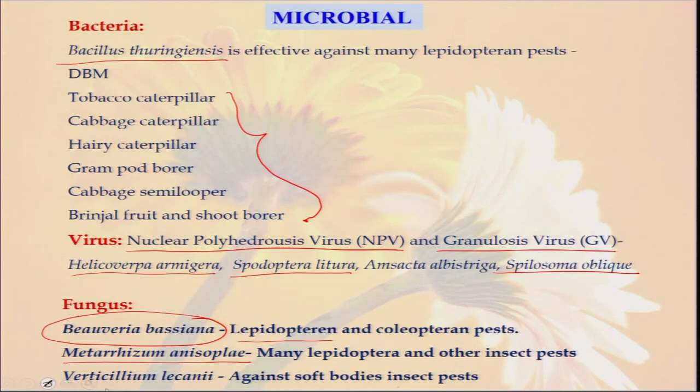There is another fungus called Verticillium lecanii. They also work against soft-bodied insect pests. So in our organic farming, apart from physical method, mechanical method, and cultural method, we should also promote this type of microbial culture or solution. Because whenever we apply these, they will help and complement each other, and ultimately our goal — the reduction of total insect pest and disease attack in our organic farm — can be fulfilled.